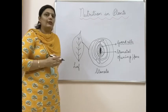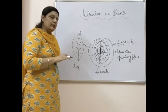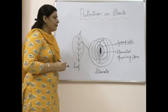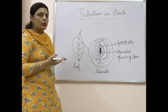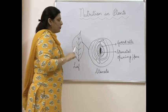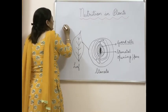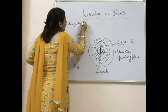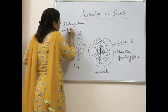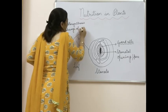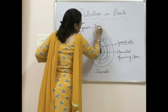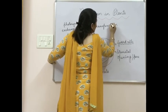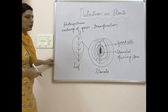Stomata obviously help in the exchange of gases, but they also perform another function — they help in the process of transpiration, which you have read about in sixth class. Transpiration means evaporation of water vapour through the surface of the leaf. So stomata have two main functions: one is they help in photosynthesis through exchange of gases — carbon dioxide and oxygen — and second, they carry out transpiration.